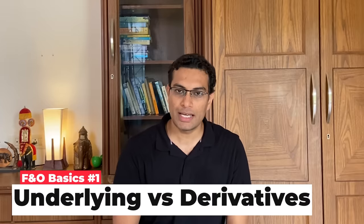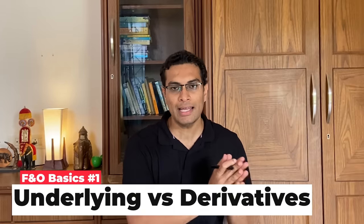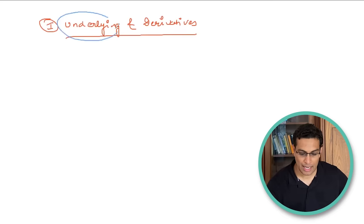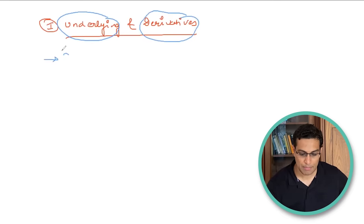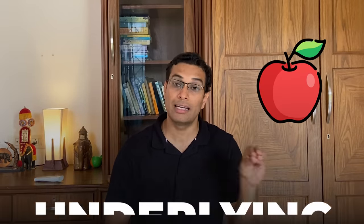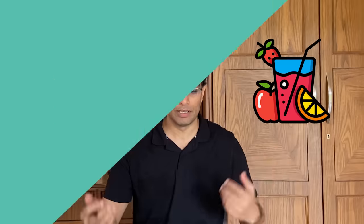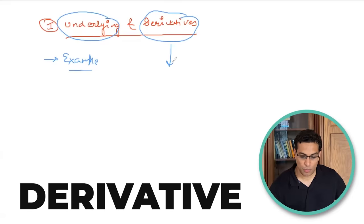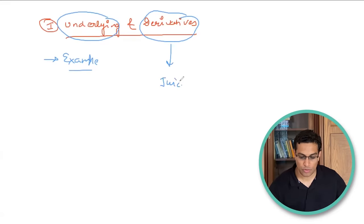Point number one is the difference between underlying and derivative. Let us understand this with a simple example. If you have an apple, that is an underlying — it has value in itself, you can buy or sell it. But if you make apple juice from it, you are deriving apple juice from the apple. So apple juice is the derivative and the apple is the underlying.